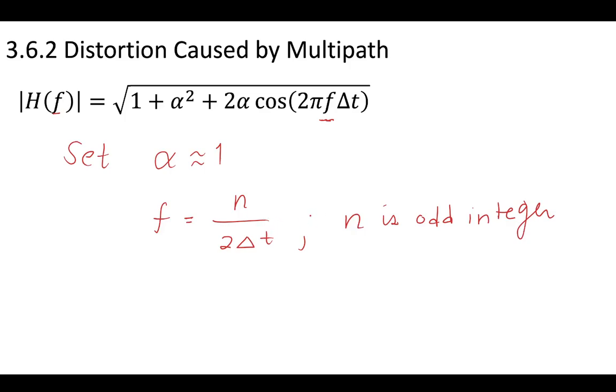Frequencies at which we have n over 2 pi delta t. So when our frequency is equal to this n over 2 delta t, we're going to see that we're going to have some effects, some bad effects. And this occurs anytime when n is an odd integer. So if our frequency happens to take on a frequency where n divided by 2 delta t, and n is an integer, we're going to see something happen.